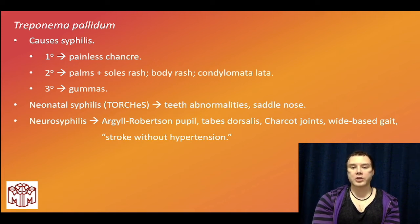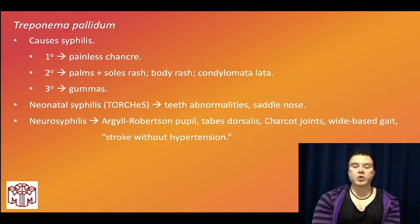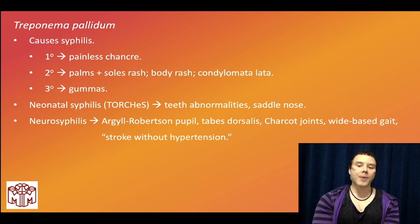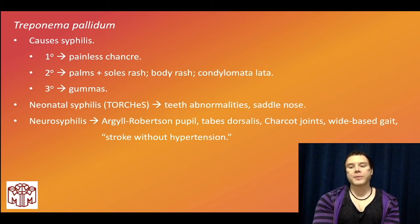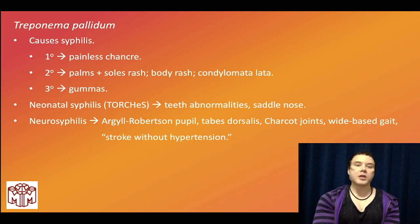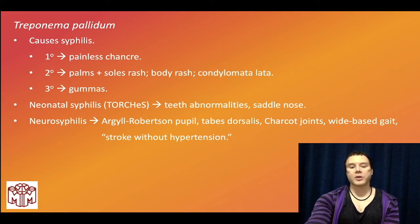Tabes dorsalis is obliteration of the dorsal columns of the spinal cord, leading to loss of vibration and proprioception. Charcot joints are neurogenic joints — joint abnormalities with erosion of skin or disorganization of bony joint structure — occurring due to loss of sensation. Neurosyphilis and diabetes are two high-yield causes for USMLE. Buzzy descriptors include wide-based gait or stroke without hypertension in a younger sexually active patient — that's neurosyphilis.